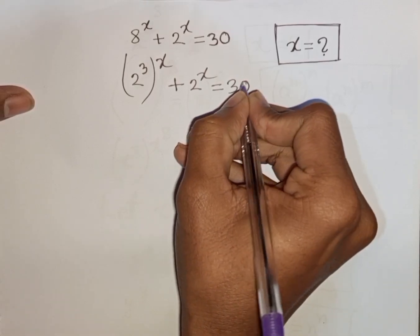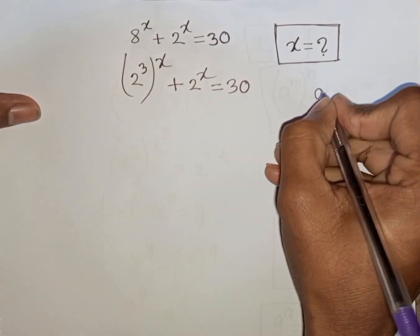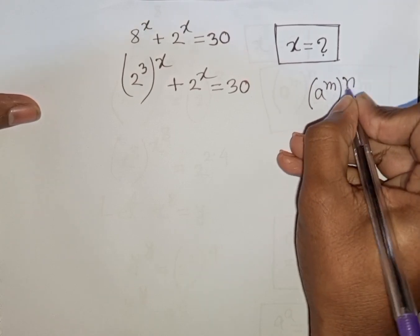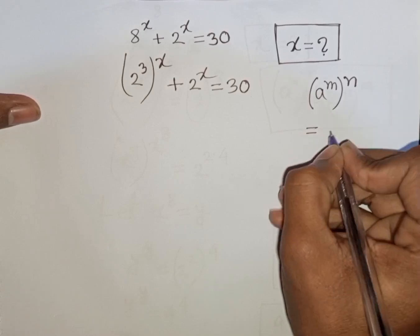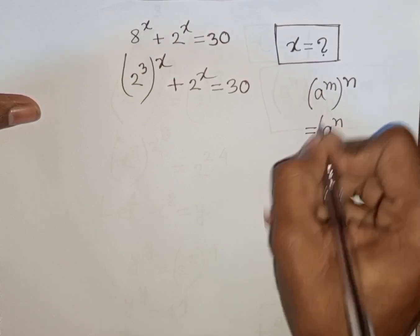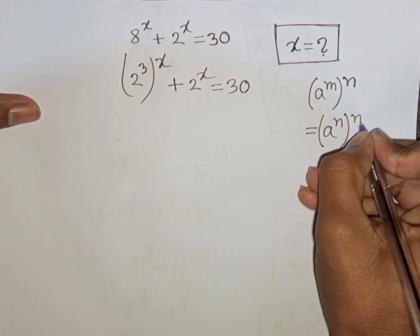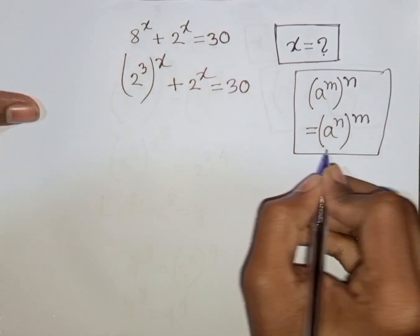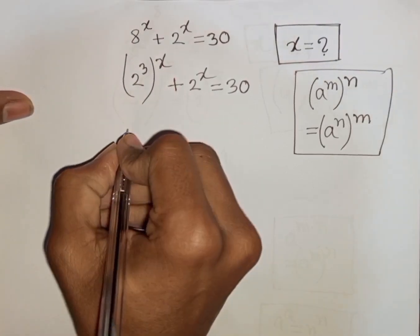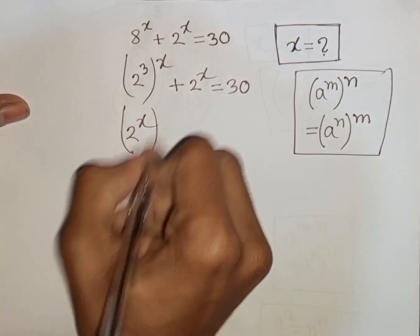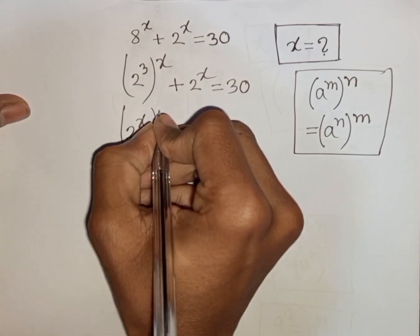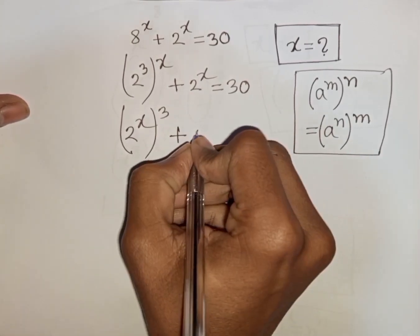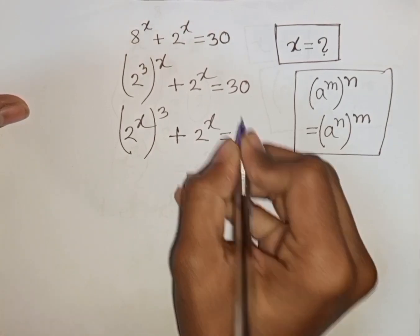Now, here you can apply the exponential rule that a power m, bracket power n, is equal to a power n bracket power m. So according to this rule, you can write here 2 power x, then bracket power 3, plus 2 power x is equal to 30.